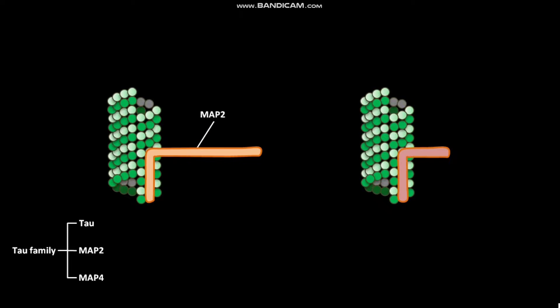MAP2 protein and Tau protein are associated with microtubules. MAP2 has a long arm whereas Tau protein has a short arm. As MAP2 has a long arm, it produces more space between microtubules, while Tau's short arm produces less space between microtubules.